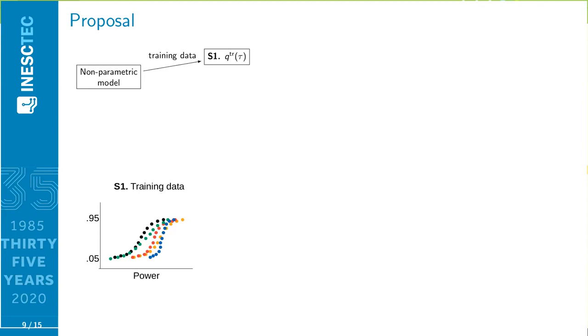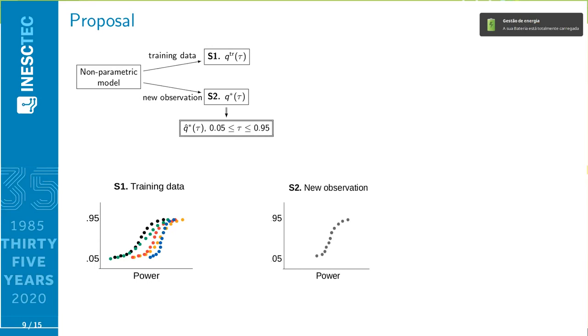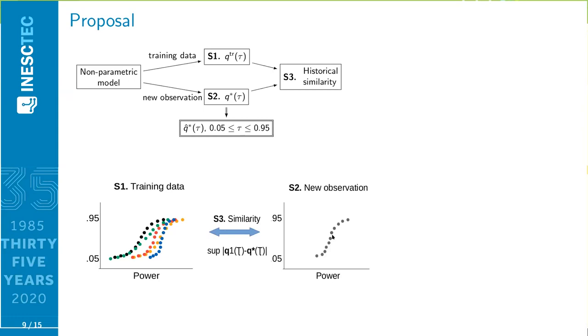First, the GBT models are trained, and the quantiles between 5% and 95% are predicted for each historical time step. For each training observation, we have an uncertainty curve, quantiles between 5% and 95%. Then, when predicting a new time step, the covariates for this new time step are used to obtain an uncertainty curve through the trained GBT model. This curve is compared with the historical ones by using the Kolmogorov statistic, which defines the distance between two curves as the maximum distance between the points of the two curves.